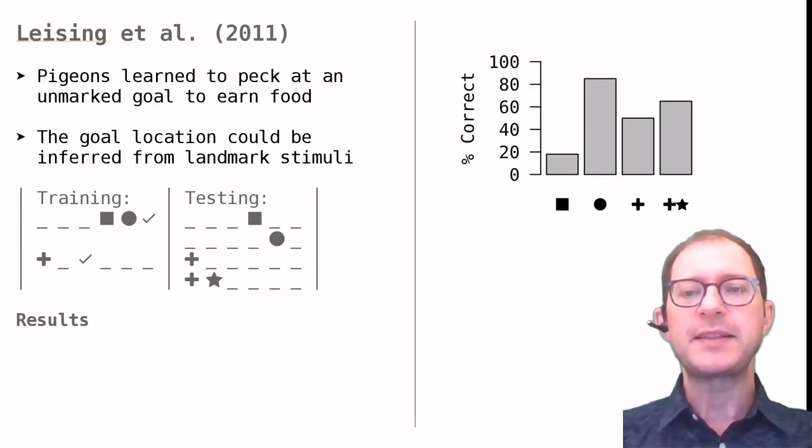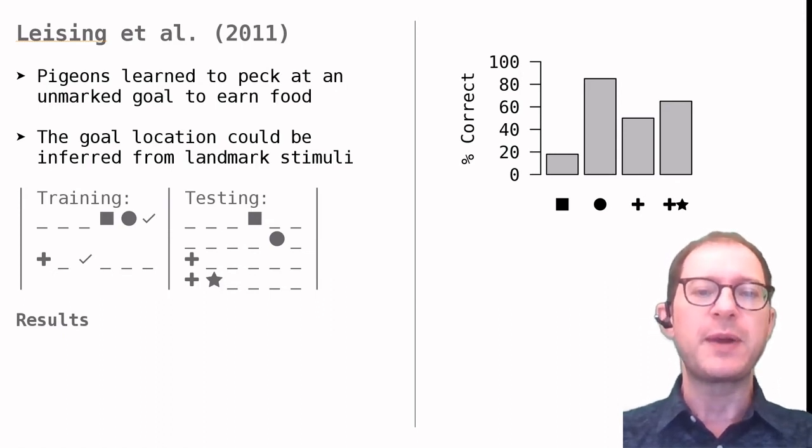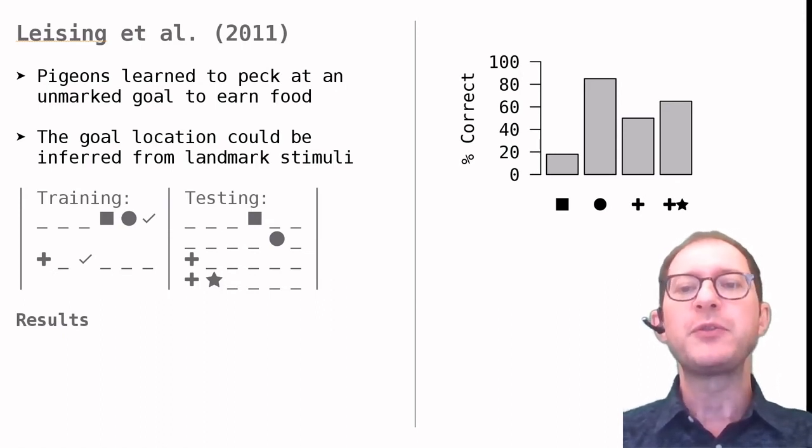After learning this task, the pigeons were given four kinds of test trials. In the first two kinds, the circle and square were presented separately. The pigeons found the goal more than 80% of the time when shown the circle, but less than 20% of the time when shown the square. In other words, the stimulus closer to the goal overshadowed the other one that was further away. To find the goal, the pigeons were relying on the circle much more than on the square.